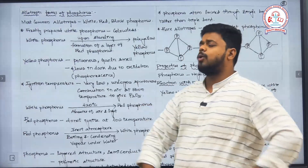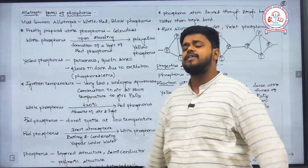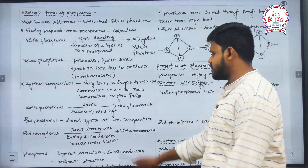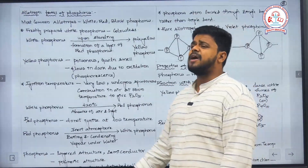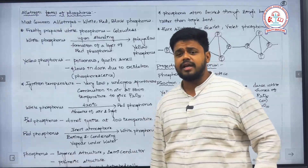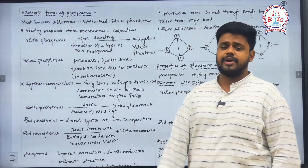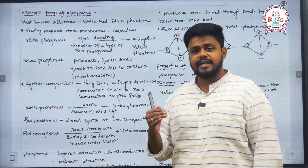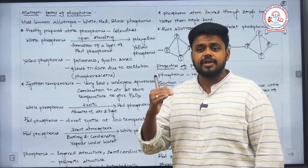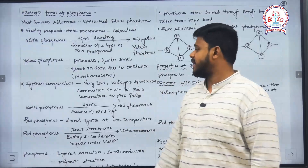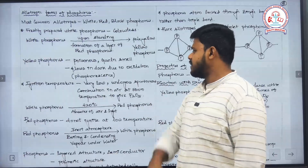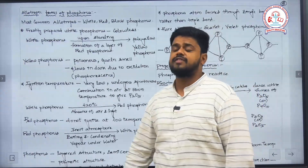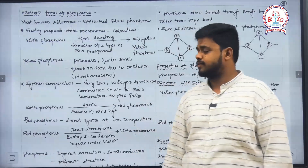When heated to 420 degrees Celsius in the absence of light and air, white phosphorus completely converts into red phosphorus. Red phosphorus does not ignite at low temperature — its ignition temperature is quite high compared to that of yellow phosphorus.